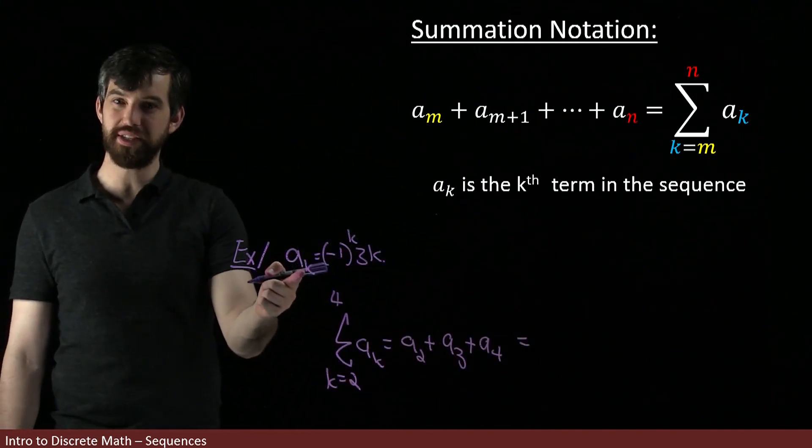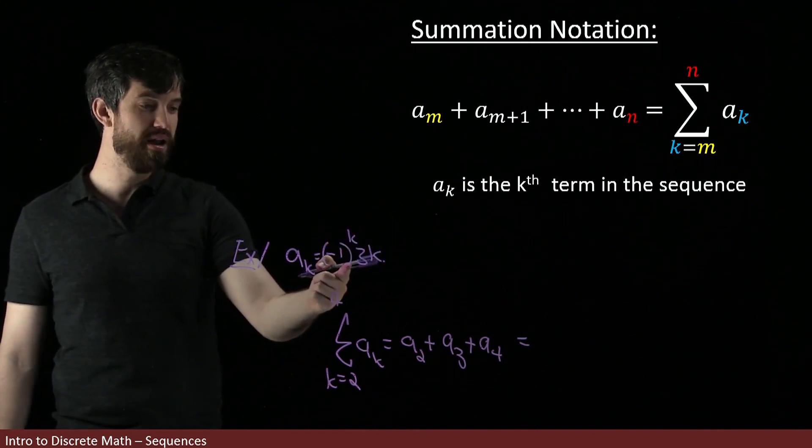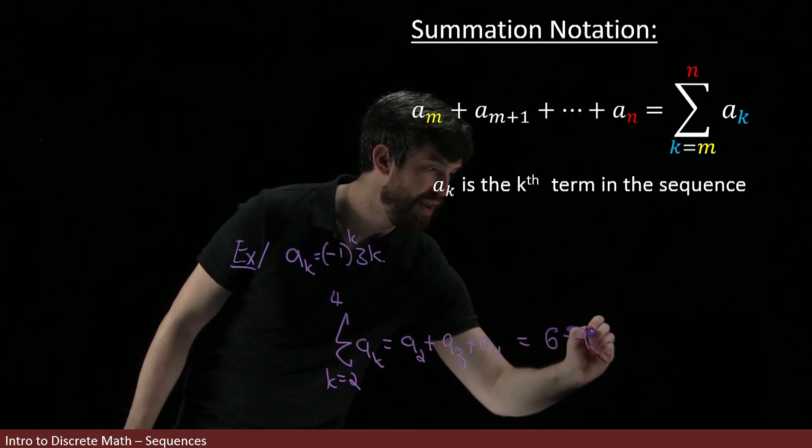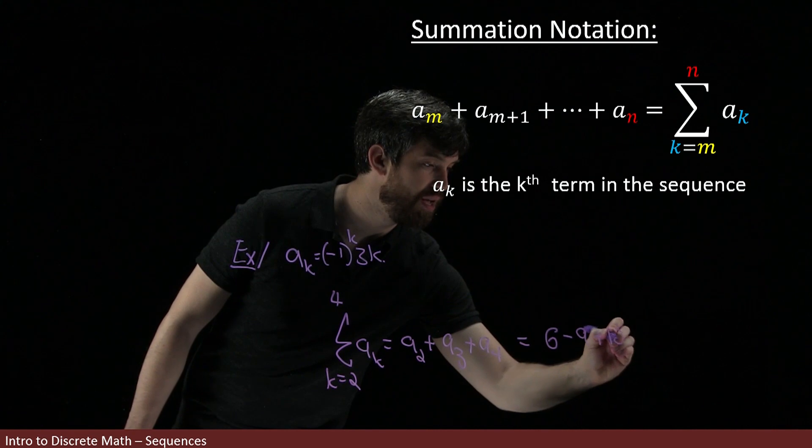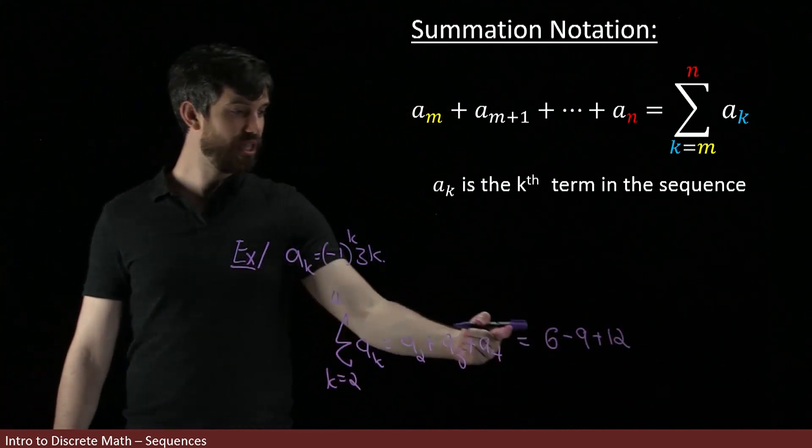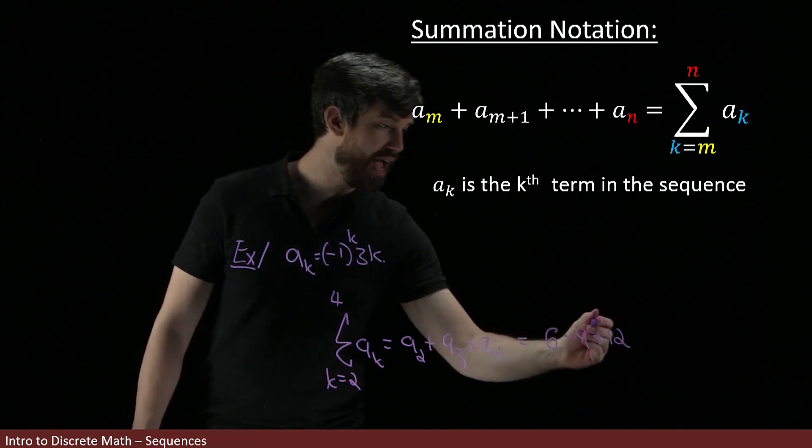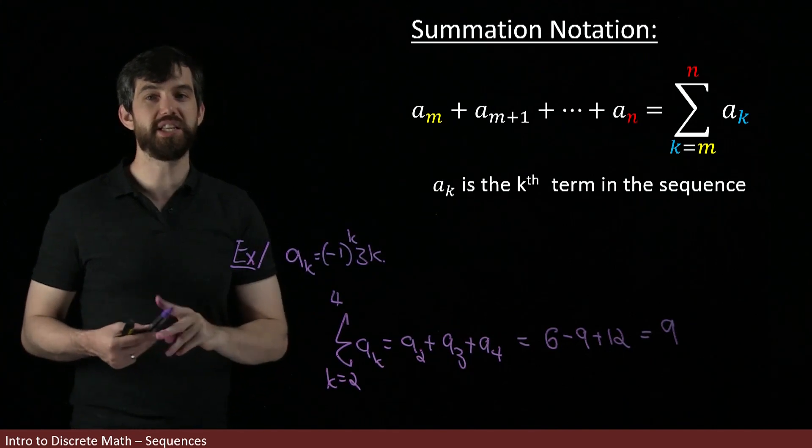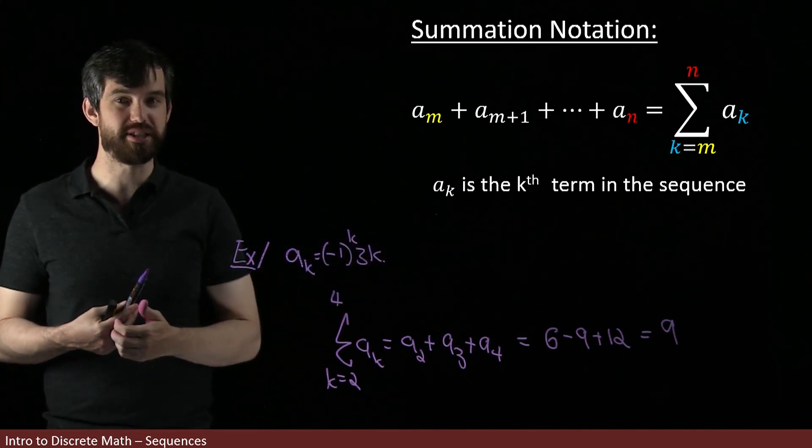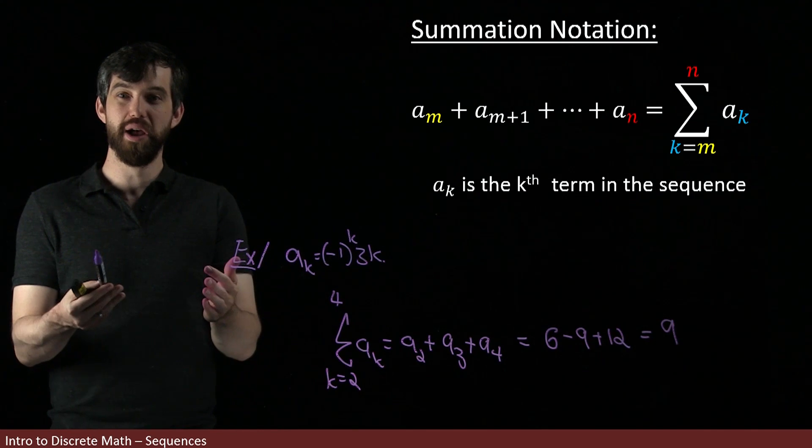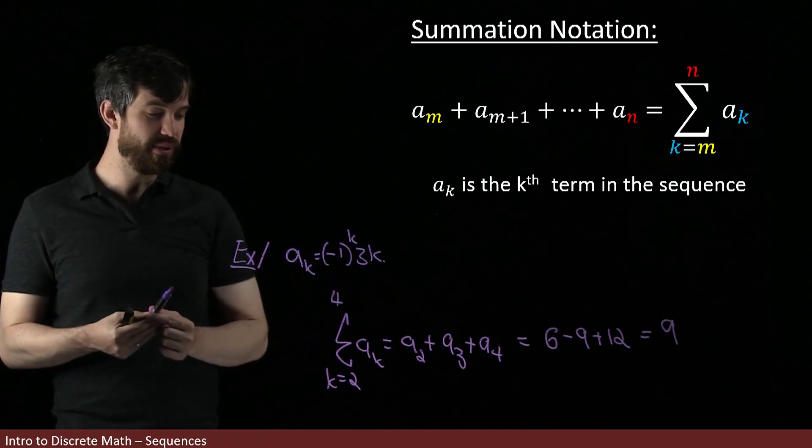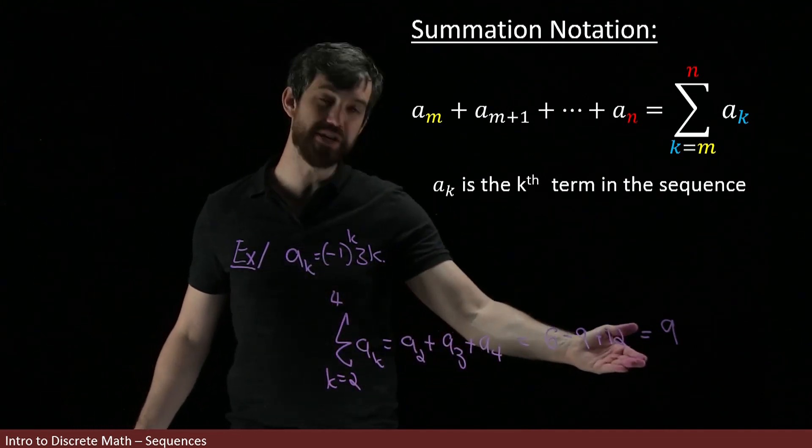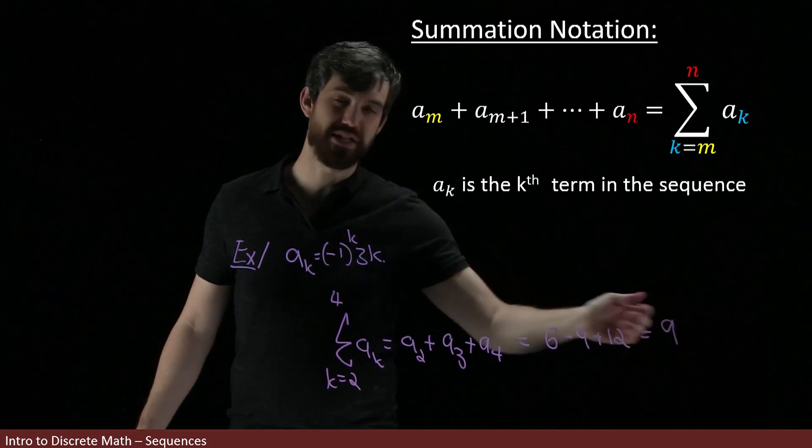And then, we've seen previously what these terms were. Like, if I wanted to do the a2, that's k equal to 2. So, minus 1 squared, which is going to be a plus 1, 3 times 2. So, this is going to be 6. And then, the next term is minus 9. And then, the next term after that is going to be plus 12. And this looks like 6 and 12 is 18 minus a 9. This looks like it's going to have the value of 9. So, in other words, there's a lot of fancy notation to do a sum with only three things. The point is to deal with ones that are much more than 3. But, we can see this in a simple example. The sum from 2 to 4 of this particular sequence is going to be this expression. And we can add them up, and it gets to the value of 9.